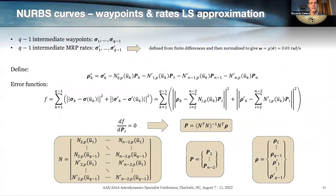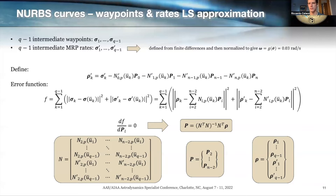The good thing is that the least-square approximation can fit multiple requirements into its formulation. By coming up with a smart way of defining the MRP rates — defined here as sigma-prime — it is possible to devise a modified error function f that incorporates both the errors with respect to the attitude waypoints and the errors with respect to the desired angular rates. The solution approach is exactly the same: we differentiate by the control points and get a slightly larger but again overdetermined system, solved the same way using the pseudo-inverse. This time the matrix contains both the basis functions and the derivatives of the basis functions.